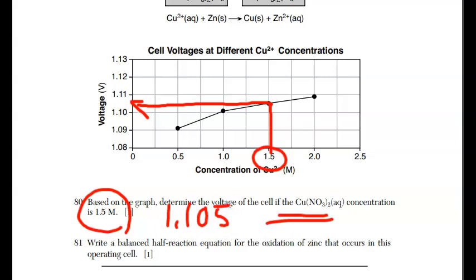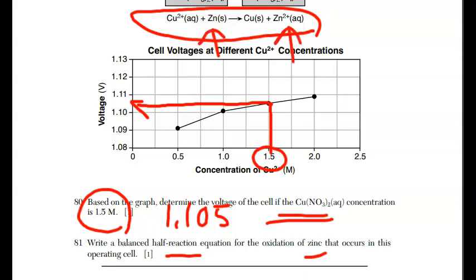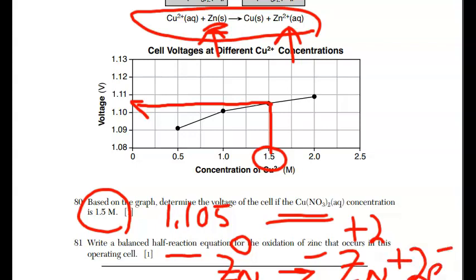For 81, it says, write a balanced half-reaction equation for the oxidation of zinc that occurs in this cell. You're given the overall redox equations without the spectator ions, and you can pull down what's going on with zinc. Now, oxidation, LEO, loss of electrons. I have zinc, and it's going to zinc ions. So it's going from an oxidation number of zero, because it's a solid here, plus two. And what does that mean? That the zinc atoms have lost two electrons. And there's your half-reaction.